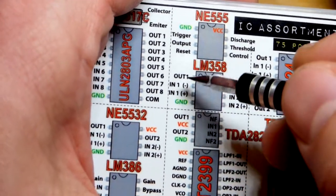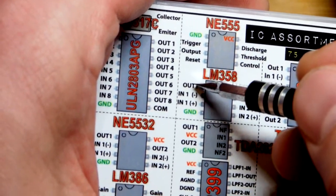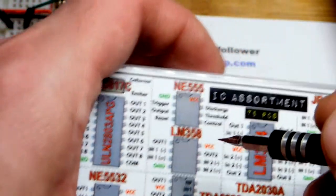So now you notice here output is the top left pin. We're not going to use that op-amp. Output is the top pin. Right below it's the inverting input and then the non-inverting input.